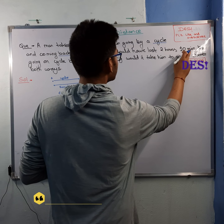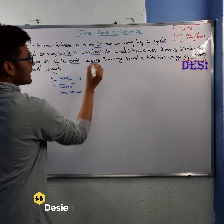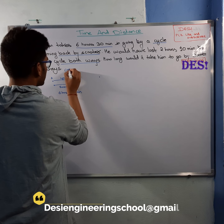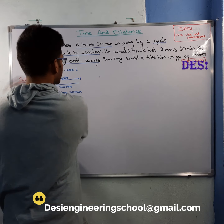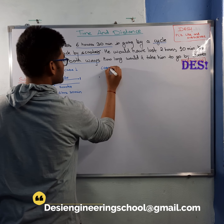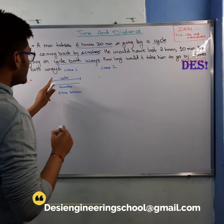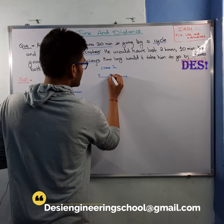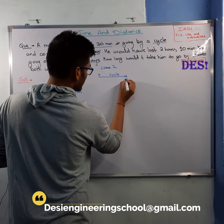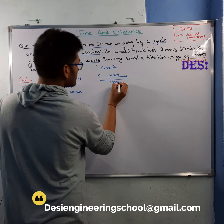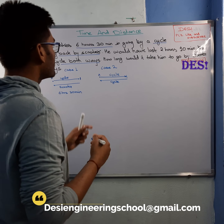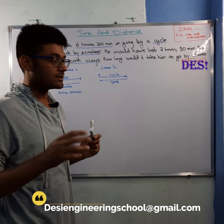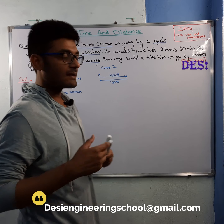He would have lost two hours ten minutes by going on cycle both ways. When he goes both sides by cycle, that is case two. He has lost his time by 2 hours and 10 minutes — meaning it takes more time. So going by cycle both ways takes more time than the mixed case.